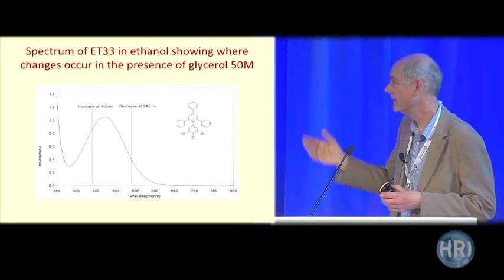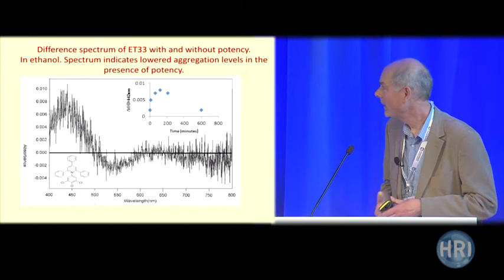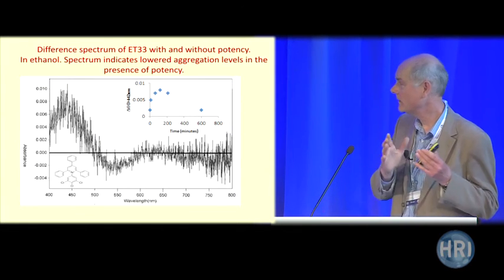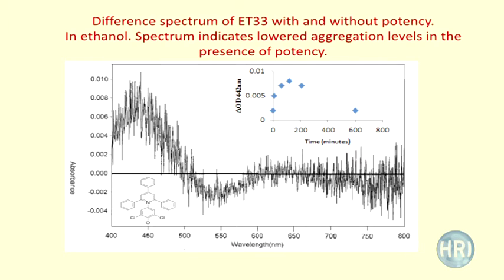The difference spectrum between dye plus control and dye plus potency shows a decrease at around 540 and an increase at 440. It's asymmetric, which means there's something very odd going on in solution. Because this is a zwitterionic dye in the ground state, potencies are decreasing the level of aggregation — there's a blue shift. The time course of the change is not immediate; it's a slow build-up then a slow decline over several minutes, maxing at about 150 minutes, then declining so that overnight there's no difference.